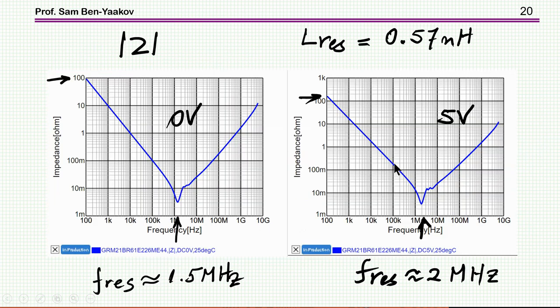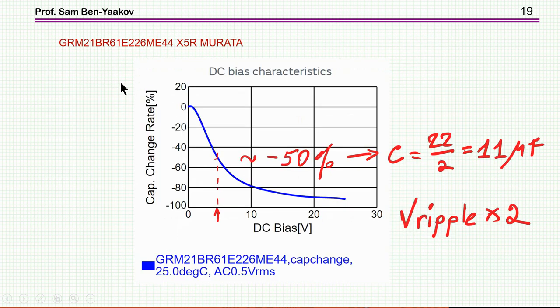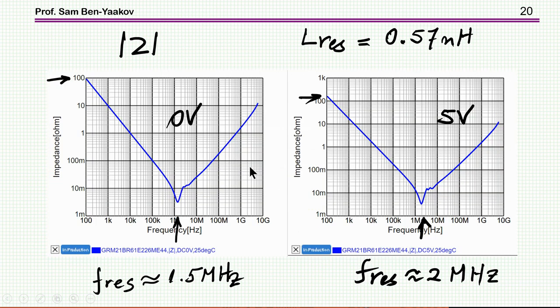And then I probe a little bit deeper into this capacitor, and I see here is the impedance. This is the resonance point between the capacitor and the self-inductance. And notice that under voltage, and that's very nice, that Murata, this is the Murata company, and they have this simulator that you can change the bias on the capacitor and see the effect of it. And indeed there is an effect.